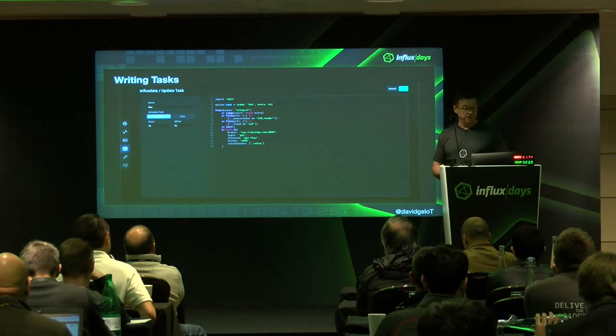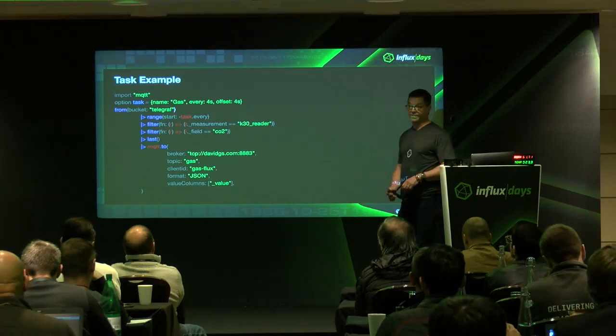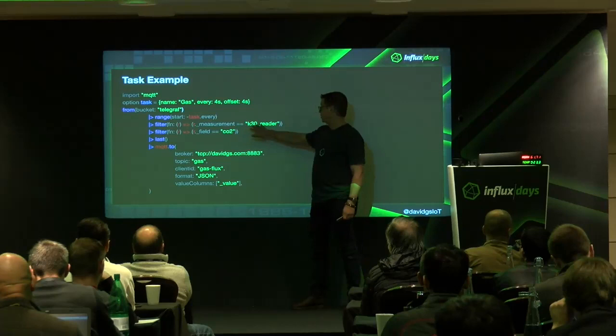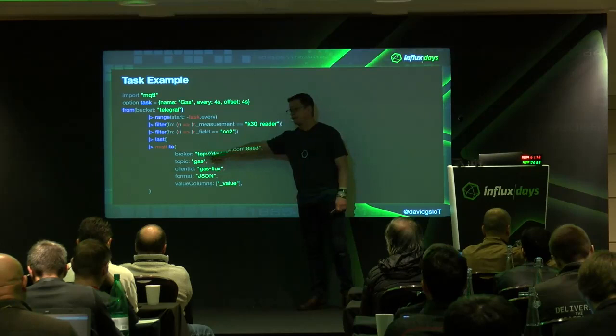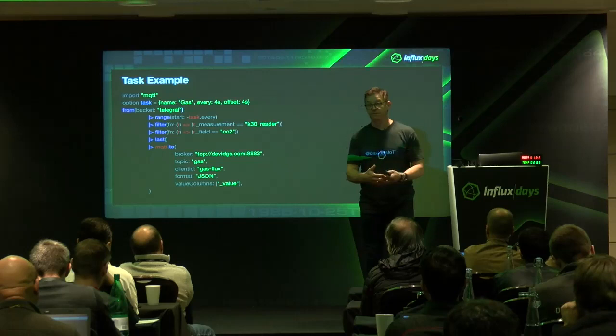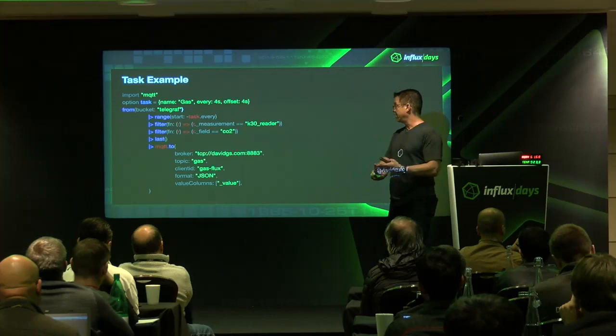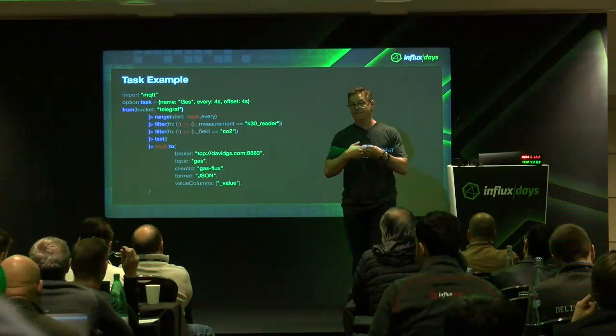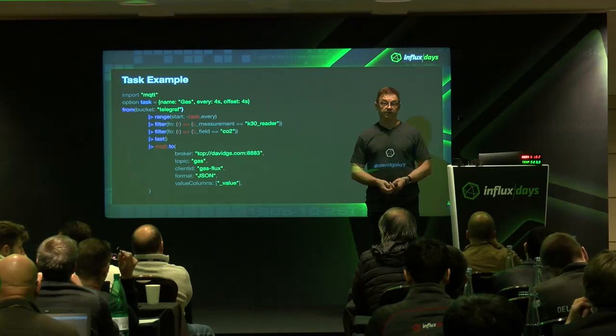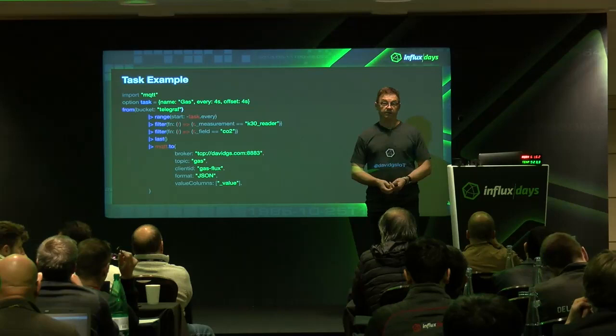Here's my task example in something you can read: I've got a range, I'm looking for the measurement I want, and I'm sending it to MQTT. The MQTT part of Flux needs the broker, the topic, a client ID, and the format and values — and it will send that information out to the MQTT broker. This will be coming in a future version of Flux; I just have to finish the test suite.